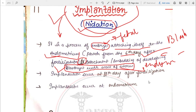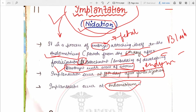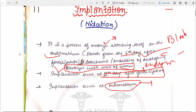Implantation is completed at the 11th day after fertilization. It starts at the sixth day and completes at the 11th day. Implantation occurs at the endometrium, which is the inner layer of the uterus. This concludes the definition of implantation.